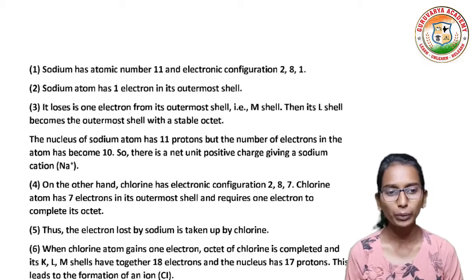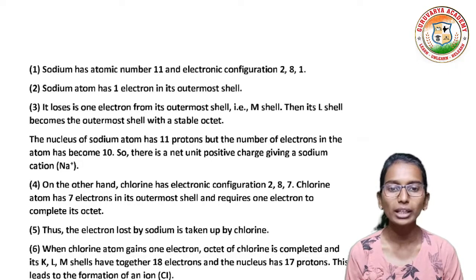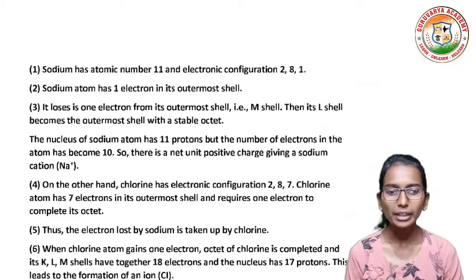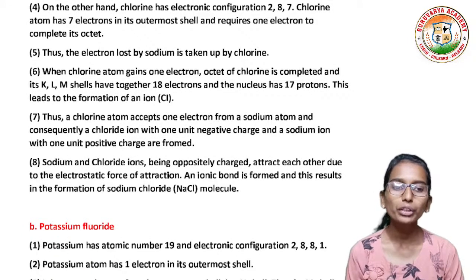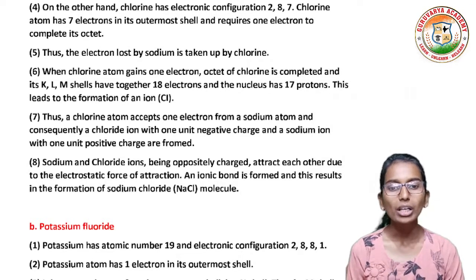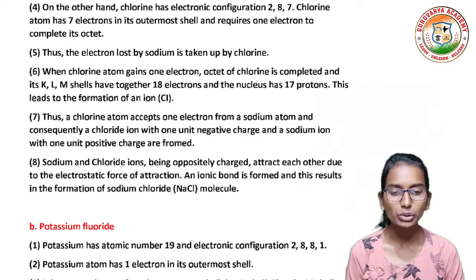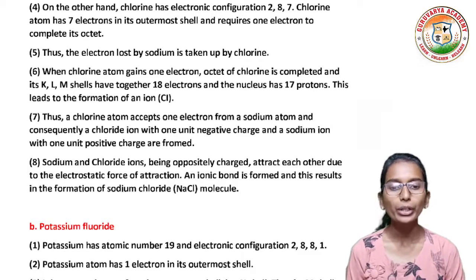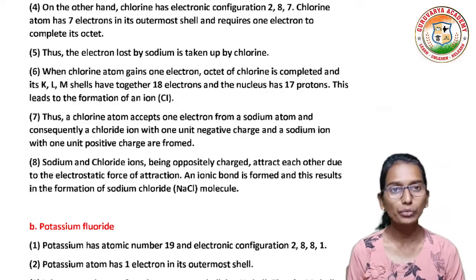On the other hand, chlorine has electronic configuration 2,8,7. Chlorine atom has 7 electrons in its outermost shell and requires one electron to complete its octet. The electron lost by sodium is taken up by chlorine. When chlorine atom gains one electron, octet of chlorine is completed; it has 18 electrons and the nucleus has 17 protons, forming chloride ion Cl−. Thus sodium ion Na+ and chloride ion Cl− with opposite charges attract each other due to electrostatic force of attraction. An ionic bond is formed, resulting in the formation of sodium chloride, NaCl.